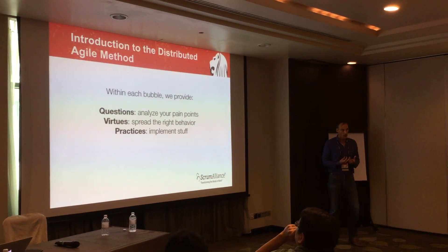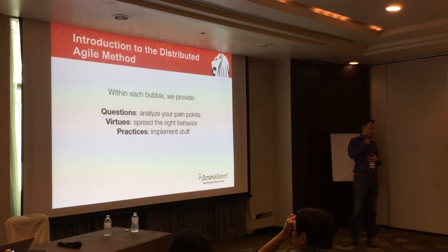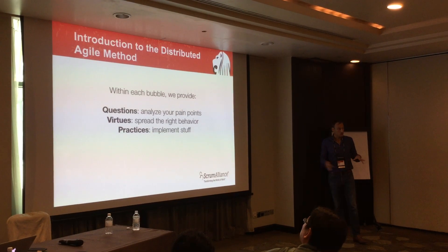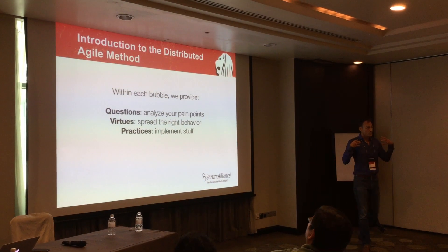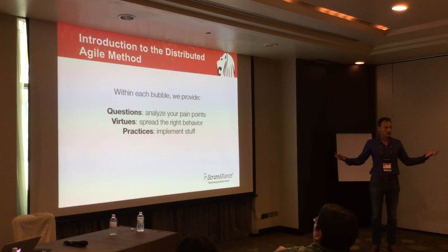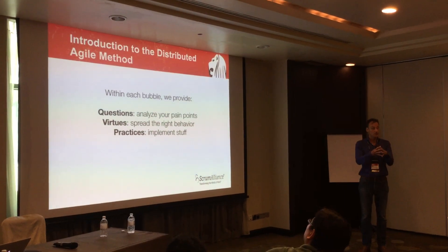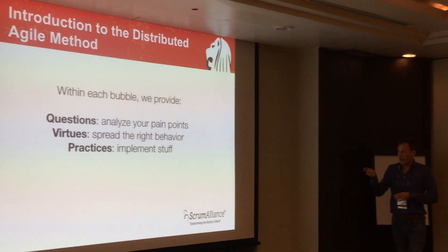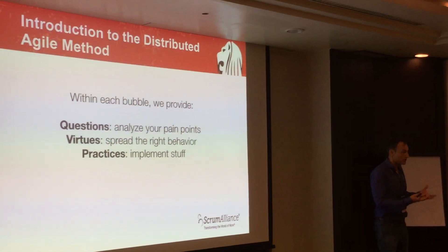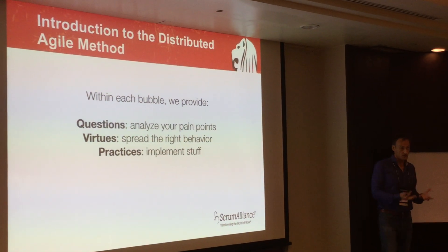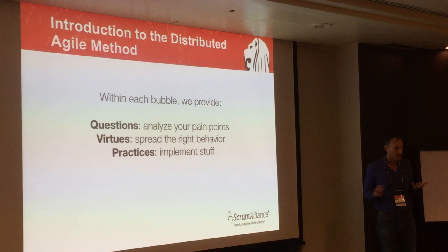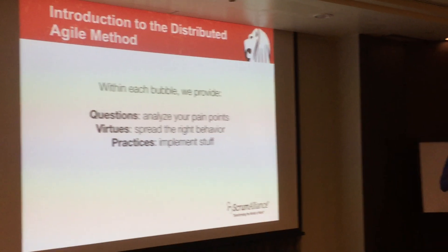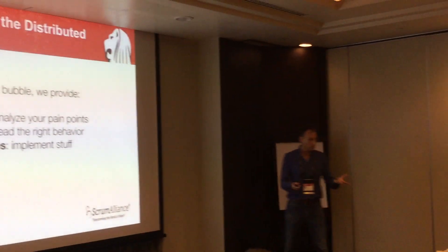Within each of those bubbles we've got questions, virtues, and practices. The questions help you analyze where you're at and what issues you're facing today. The virtues are guidelines or values that can help teams or leadership define the right behaviors, so that distributed teams or the distributed organization runs more smoothly. The practices are practical experiences from people like you — things that have worked within your context — so that other people can actually use them as well.